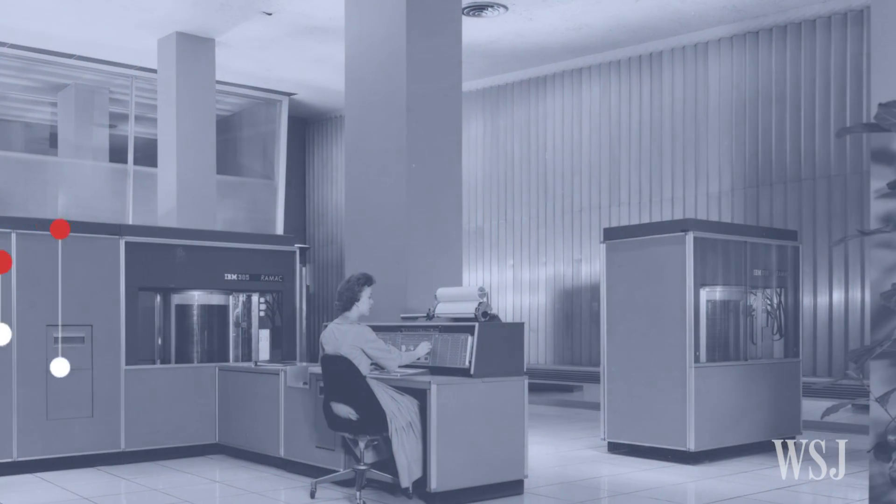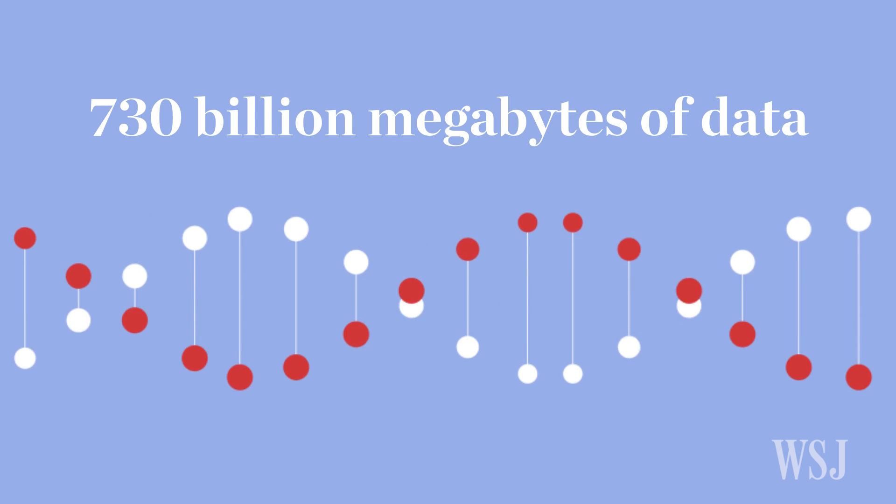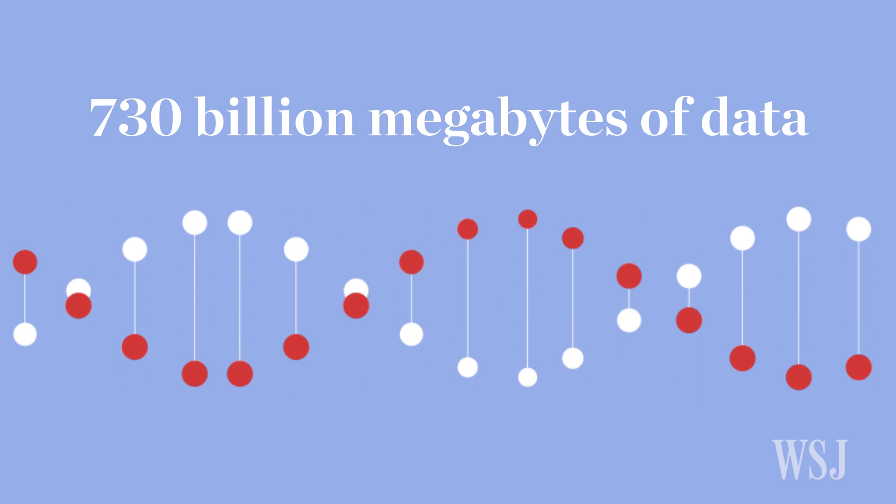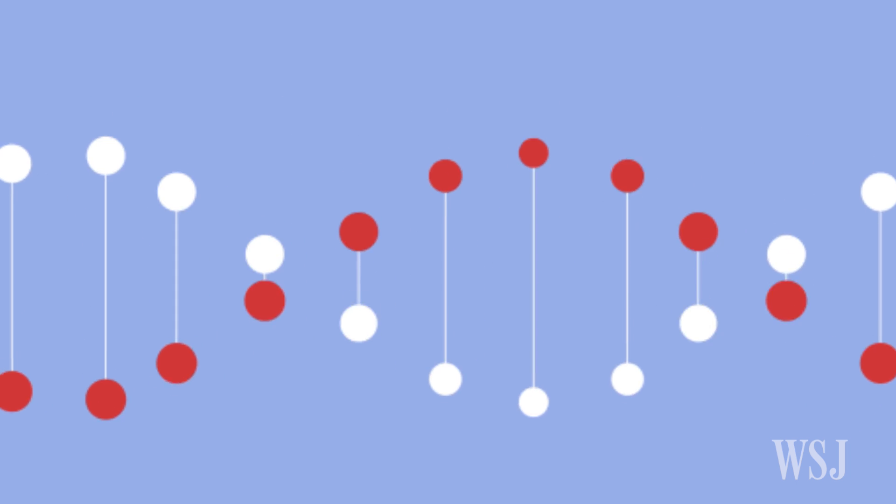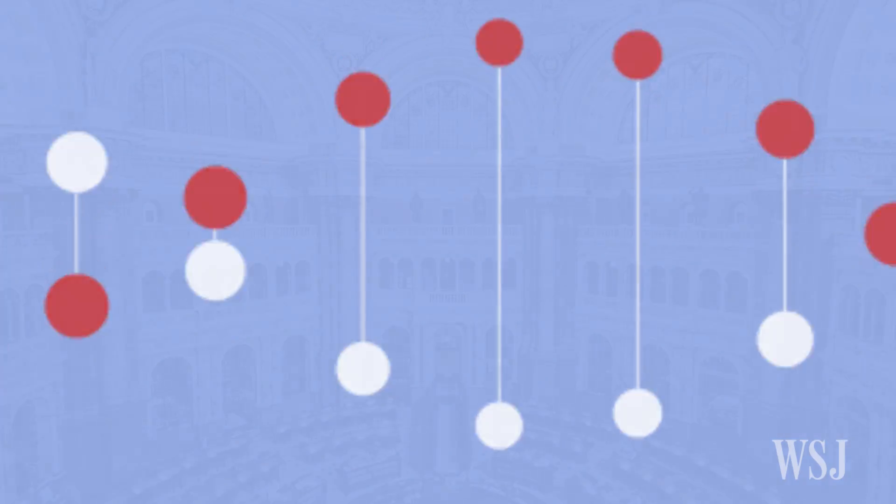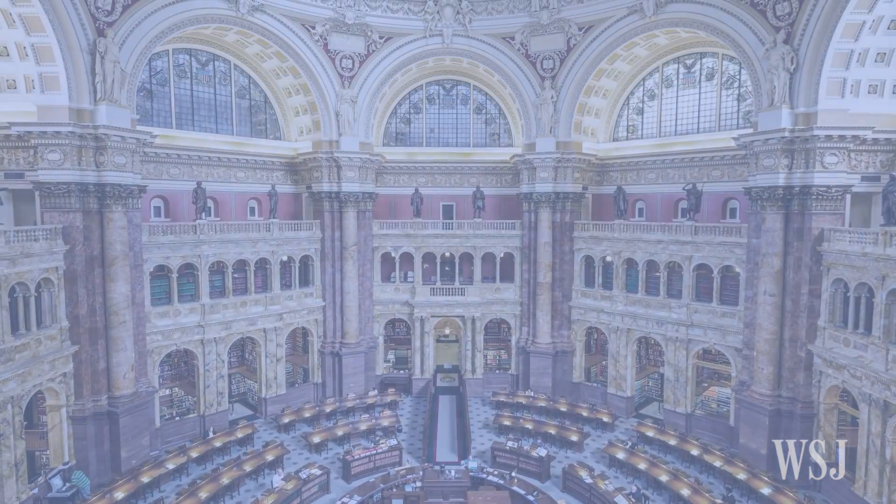A single gram of DNA could hold about 730 billion megabytes of data. In theory, a DNA storage system could reduce the entire Library of Congress to a collection of molecules.